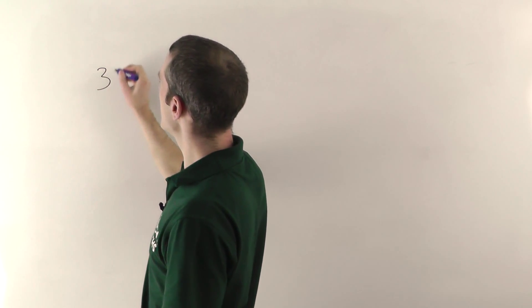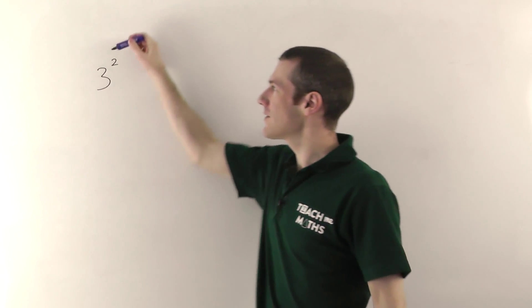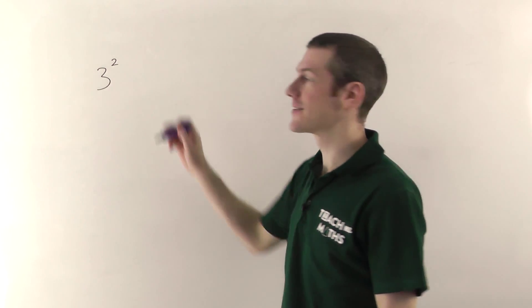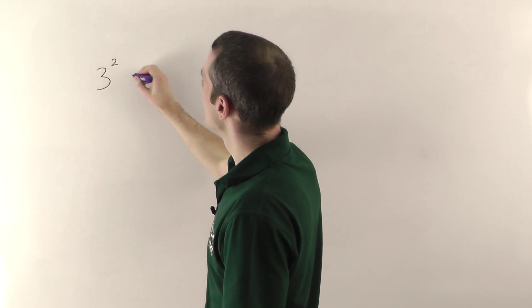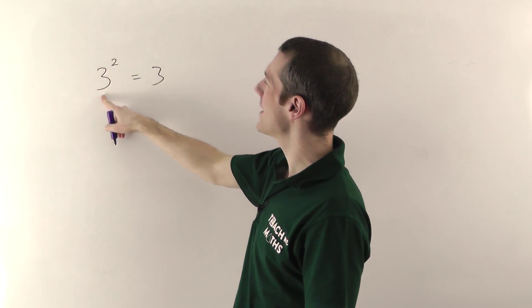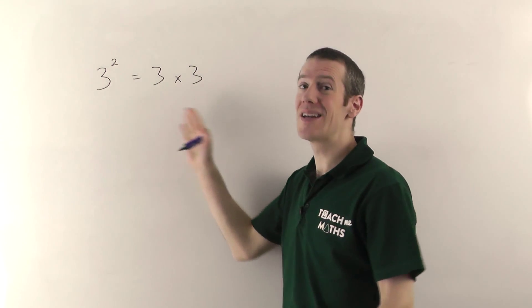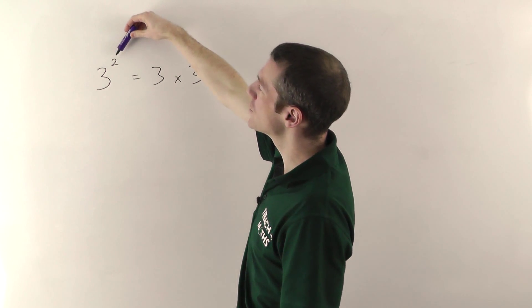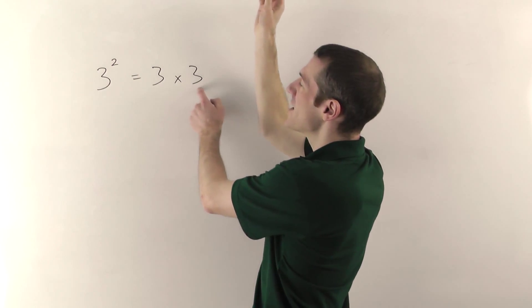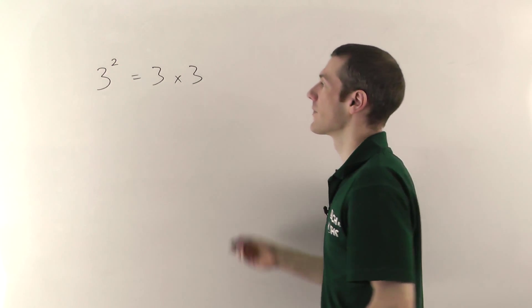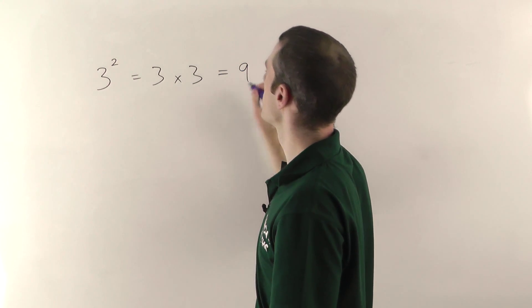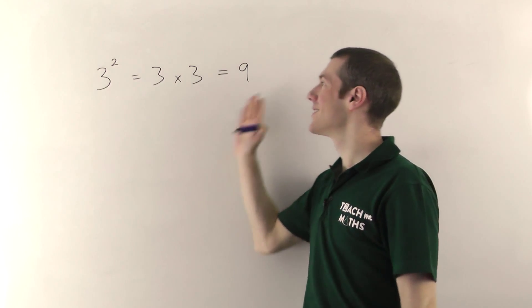So if you take a number like 3 and you square it, you have to write a little 2 at the top right and what that means is 3, the number here, has to times by itself, that's all it is. So 3 squared means the same thing as 3 times 3. The little 2 here tells you how many 3's you've got to multiply together. 3 times 3 is obviously 9, so 3 squared will be 9.